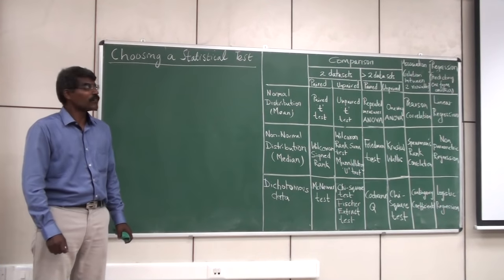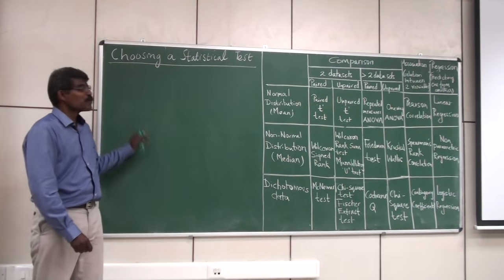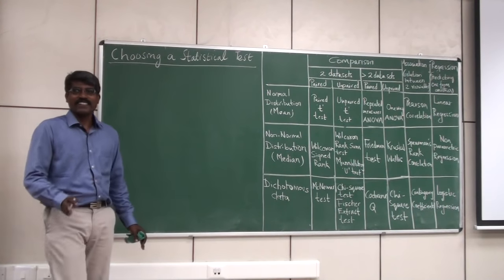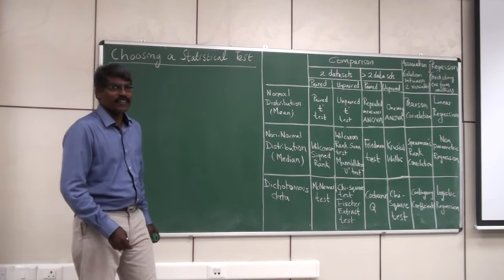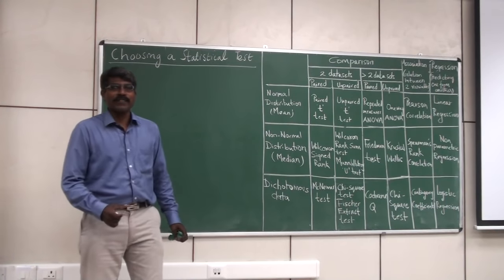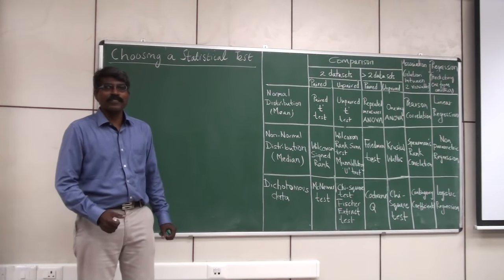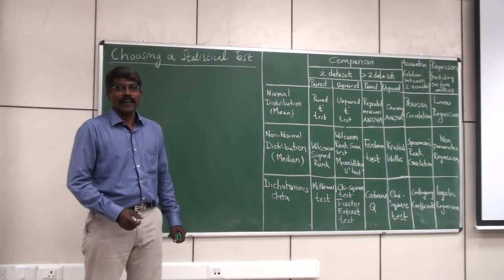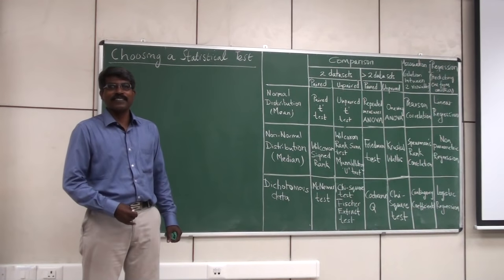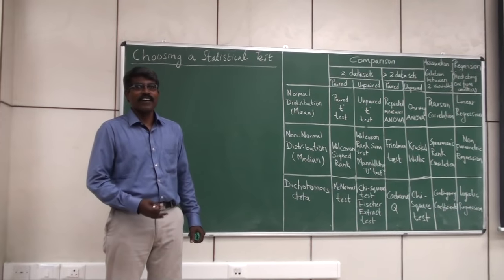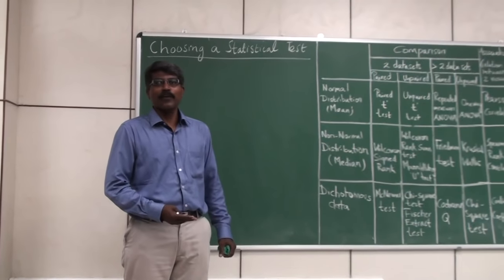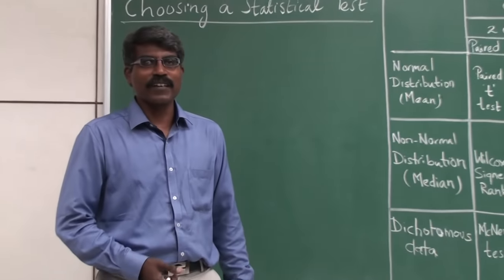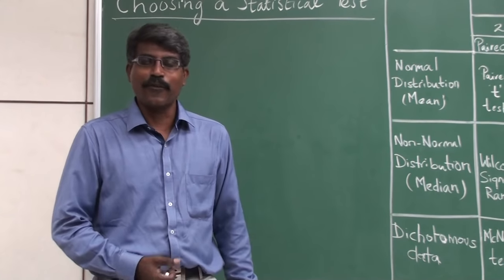This session we will see how to choose a statistical test for analysis of data. Let's start with a small simple analogy. We want to measure the weight of a ball. I give you the choice of four devices: a physical balance, a thermometer, a ruler, and a volumetric flask. Which of these four devices would you select to measure the weight of a ball?